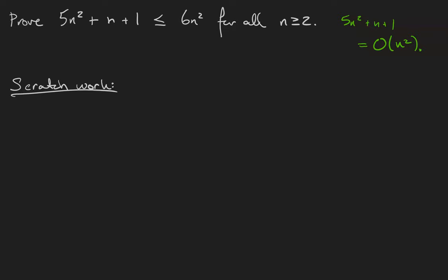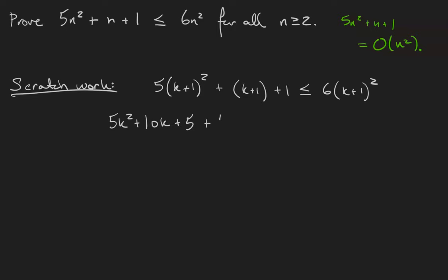Now if you've been paying attention to the last two videos, you know that at some point we're going to have to prove the statement 5 times (k+1) squared plus (k+1) plus 1 is at most 6 times (k+1) squared. If that statement is true, then the original statement will be true as well. Expanding gives us: 5k squared plus 10k plus 5 plus k plus 1 plus 1 is at most 6k squared plus 12k plus 6. Make sure you can figure out how we get to that step — the distributive law is used twice.